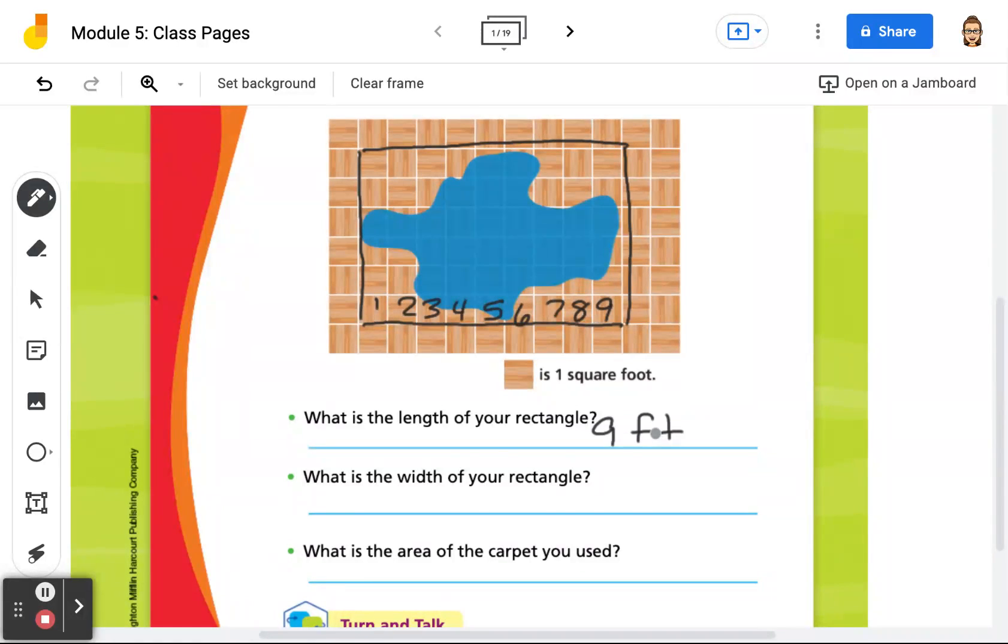And then what is the width of a rectangle? So that would be down. Okay, 1, 2, 3, 4, 5, and then 6. So we have 6 feet.